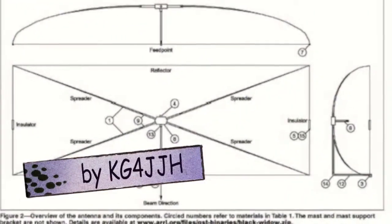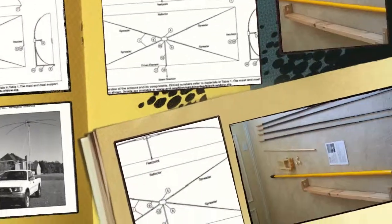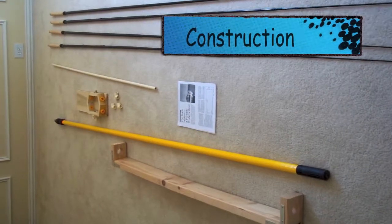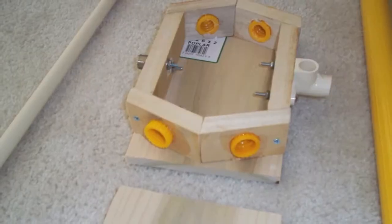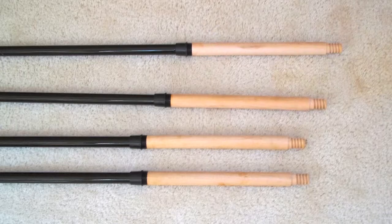Written by KG4JJH, it is constructed with four fiberglass fishing poles, wood with PVC plumbing feed to the driven element, and mop handles.